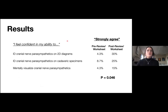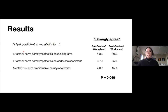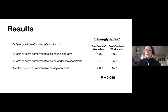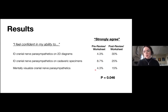For the confidence questionnaire, however, students who strongly agreed with statements such as 'I feel confident in my ability to identify cranial nerves on 2D diagrams,' 'identify cranial nerve parasympathetics on cadaveric specimens,' and 'mentally visualize cranial nerves' showed a huge difference from before to after the review. The difference between pre-review and post-review was significant, so there was a significant difference in how strongly students agreed with these statements before and after interacting with the models.